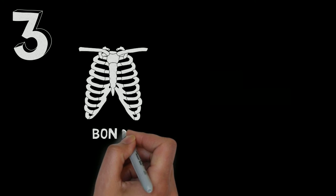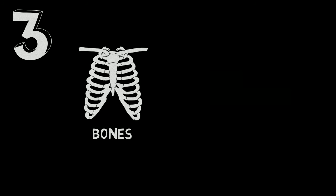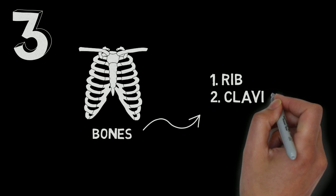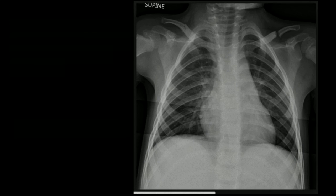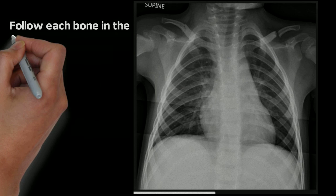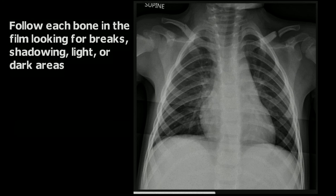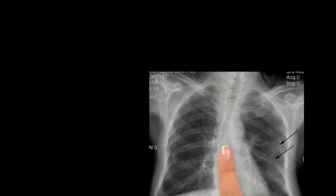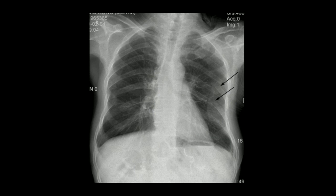For the third and final step of the Peekaboo 432 method, you should focus your attention on the bones. Scapular fractures are pretty much unheard of in primary care, so I would focus on the ribs and the clavicles. You'll want to follow each bone, right to left, up and down, to make sure there's no break. The bone should be smooth, without lesions or lighter or darker areas. Hopefully you were able to see the left clavicle fracture up here. Let's take a look at another picture to see what rib fractures look like.